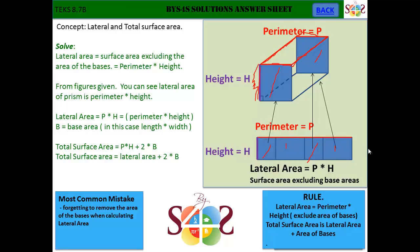So to get the area of that, you basically multiply the perimeter times the height. And that's how you get the lateral area.